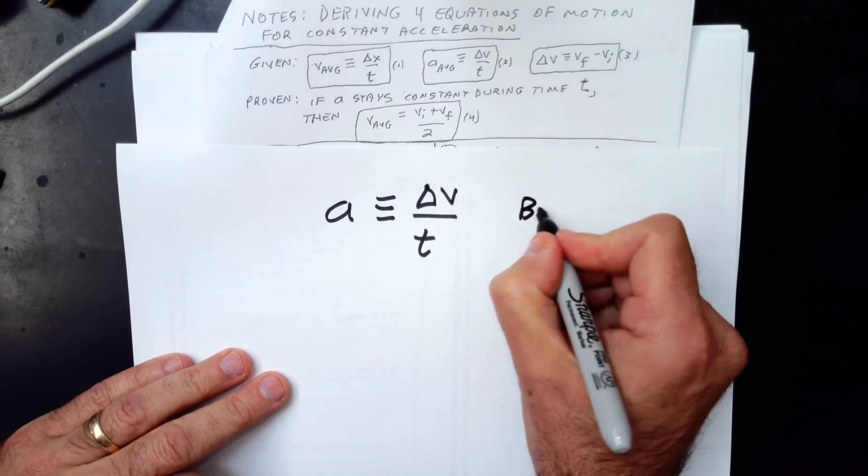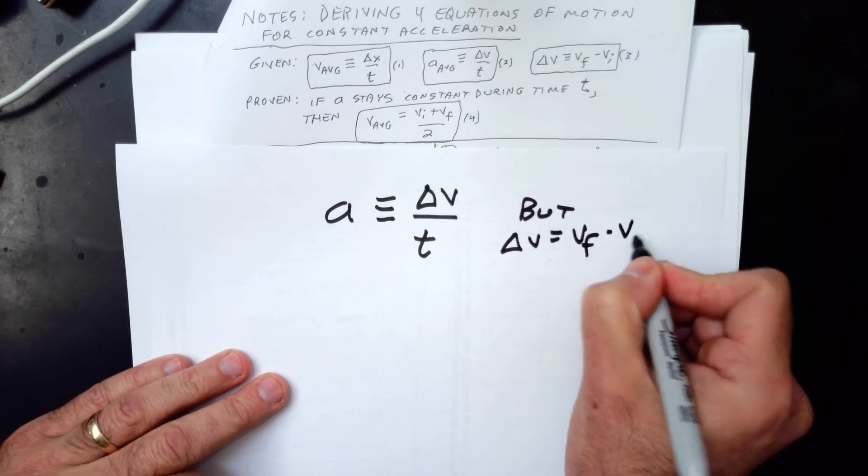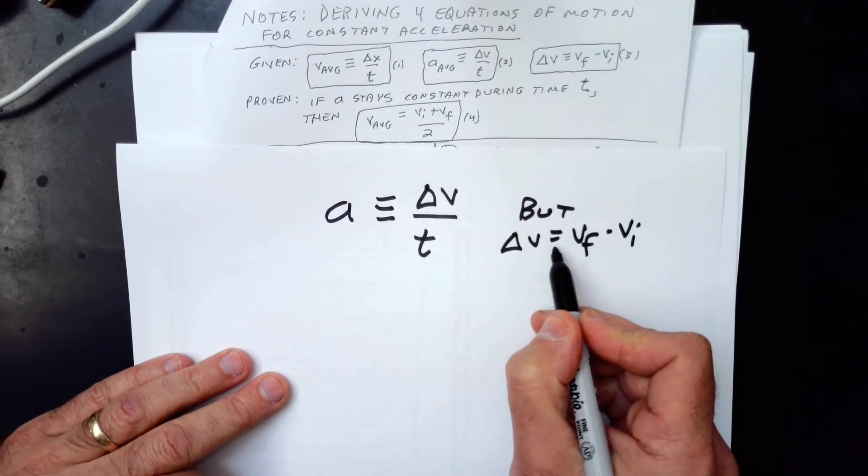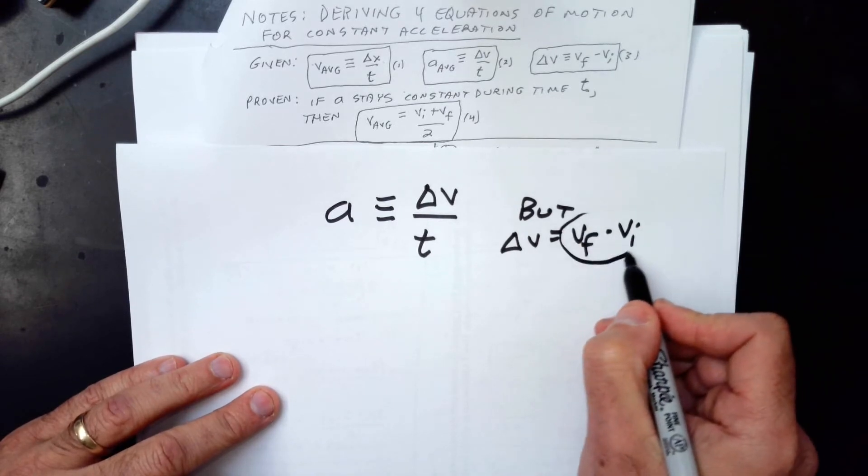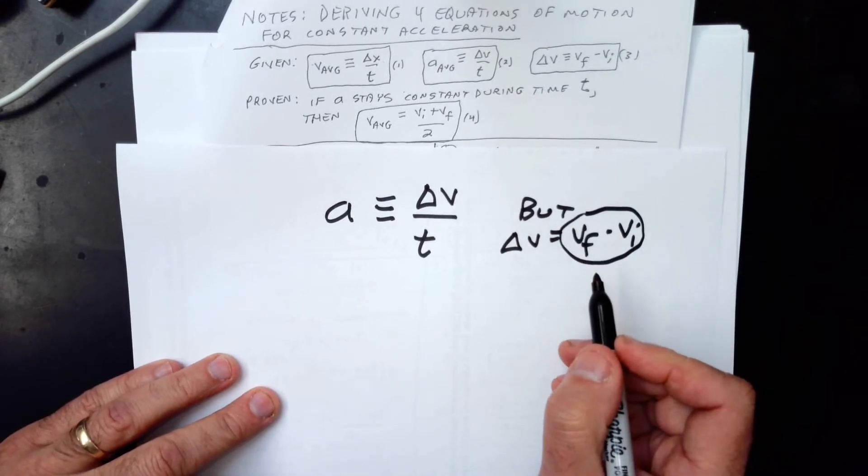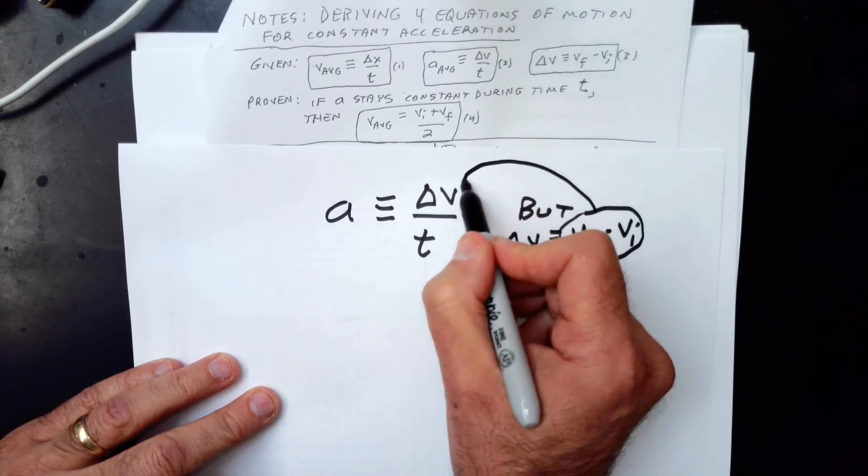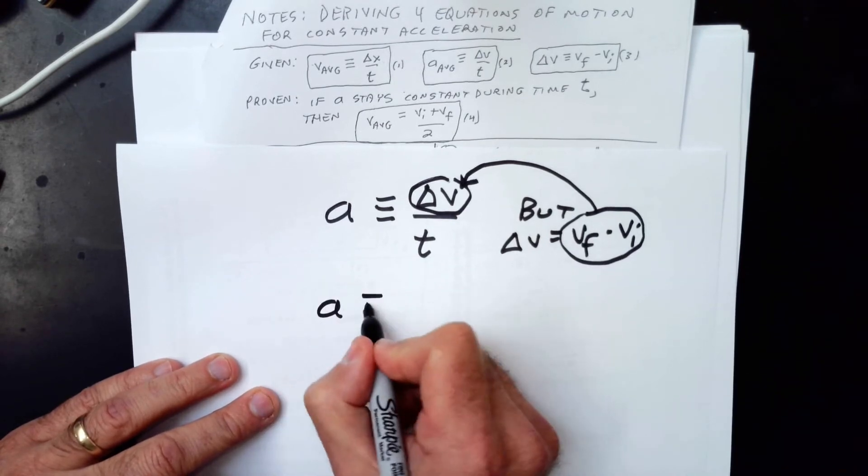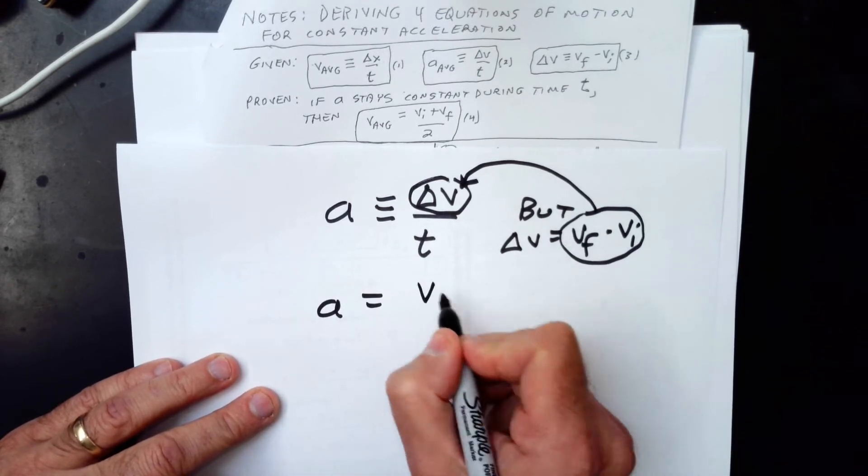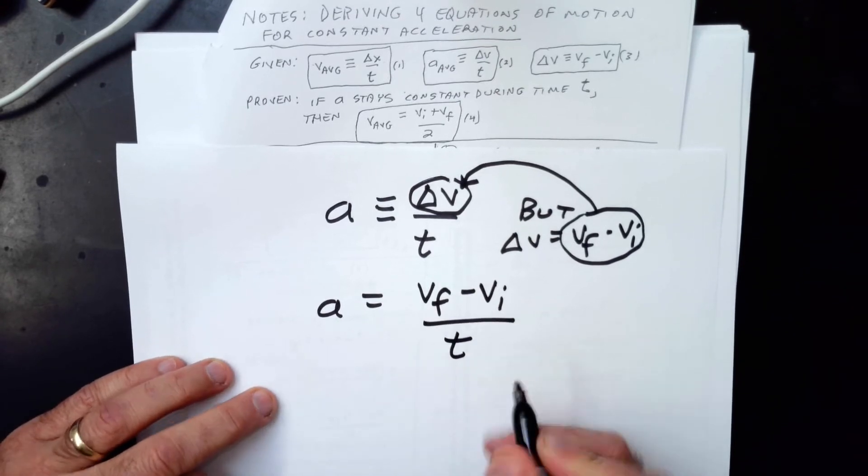So we look up here. Where do I see Δv? Right there. So I write, but Δv equals vf minus vi. And when you're doing proofs, it doesn't matter if you write three lines or two lines. Δv equals vf minus vi. So we're going to do a substitution. That's why I said that's your main tool in this is substitution. You're going, since Δv equals this, you're going to replace this Δv with that. So you get a equals this. Now, instead of Δv, vf minus vi over t.